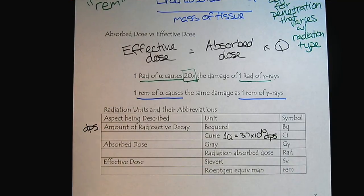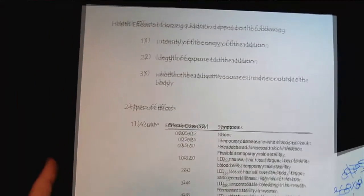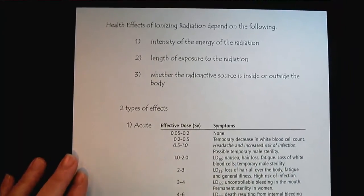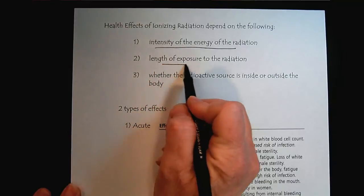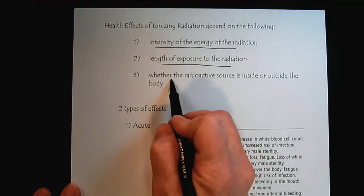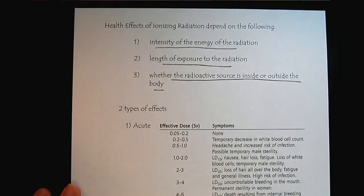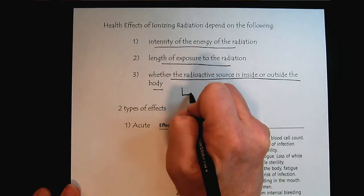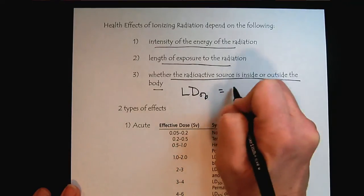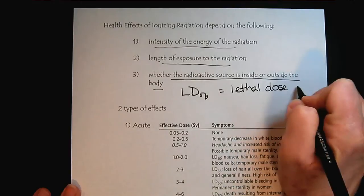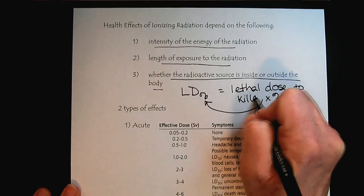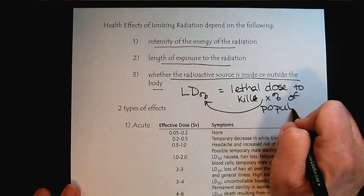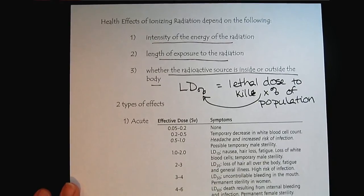Now, to put this all into context, let's look at the health effects of ionizing radiation. What we can see is that it's going to depend on the intensity of the energy and the length of exposure. And then, of course, whether the radiation source is inside or outside our body. To measure these kind of effects, we use something called the LD, and then we put a percent here. So the LD is the lethal dose to kill this X percent of population.